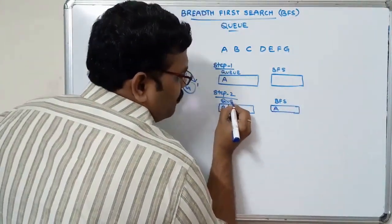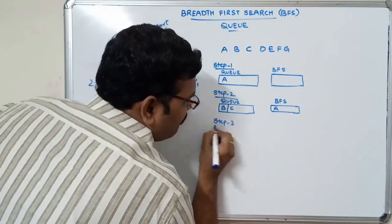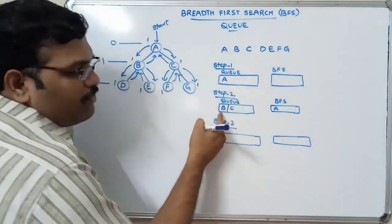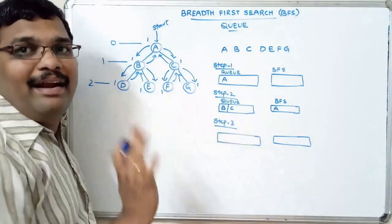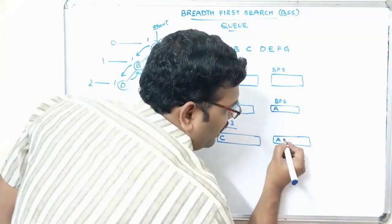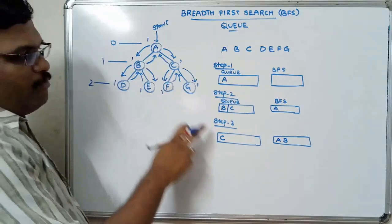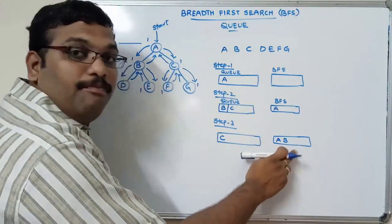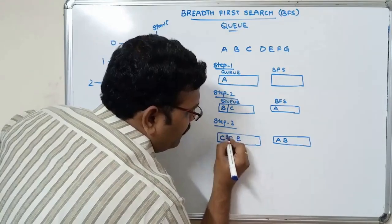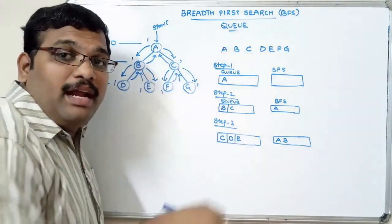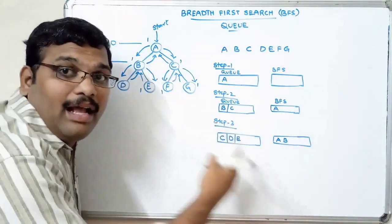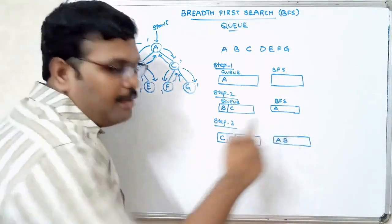Step three: remove the element from the queue from the front end. B is at the front, so B is removed and placed in BFS — A, B. Now insert all the adjacent nodes of B into the queue. The adjacent nodes of B are D and E. Insertion takes place at the rear end. So D is inserted, then E is inserted at the rear end.